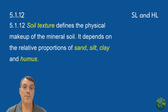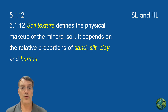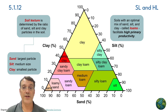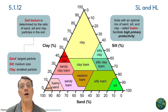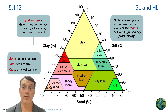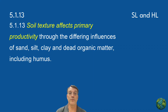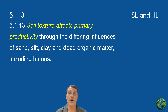Soil texture defines the physical makeup of the mineral soil, depending on the relative proportion of sand, silt, and clay, as well as humus. Soil texture is determined by the ratio of sand, silt, and clay particles: sand particles are the biggest, silt particles are in the middle, and clay particles are the smallest. Each particle type has distinct characteristics that influence how the soil system works as a whole. Soils with an optimal mix of all three, called loams, facilitate high primary productivity by creating ideal conditions for plant growth — that's why farmers love loam soils. This relationship between the physical structure and biological productivity is fundamental to understanding soil systems.